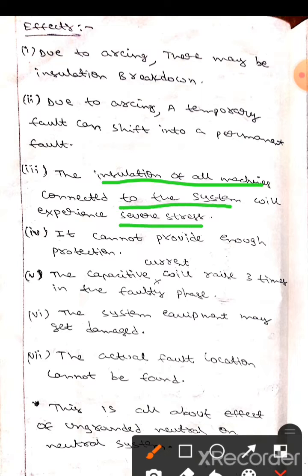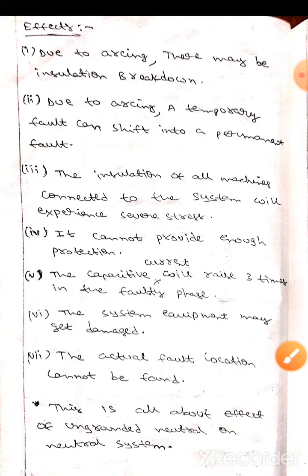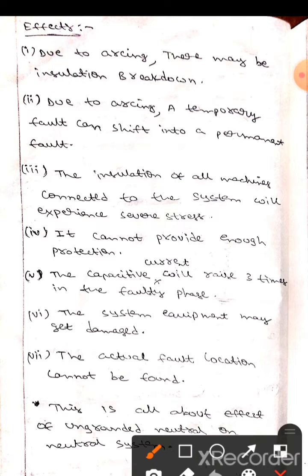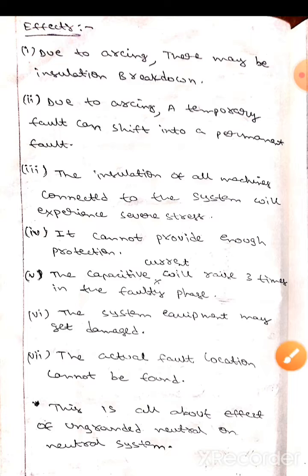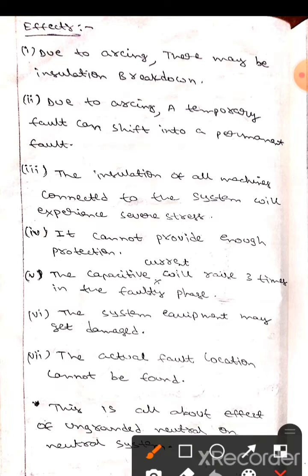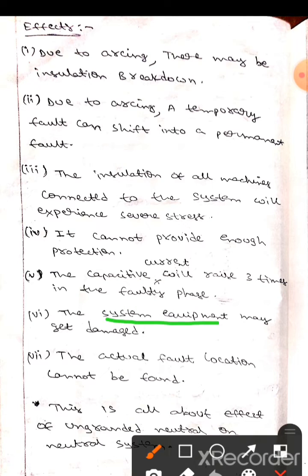The ungrounded neutral cannot provide enough protection. The capacitive current in the faulty phase becomes three times that of the normal phase, and the system equipment may get damaged.